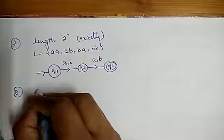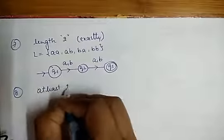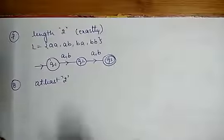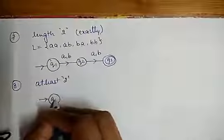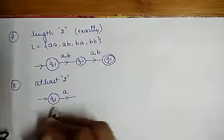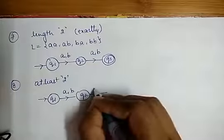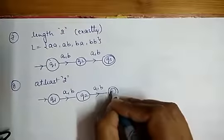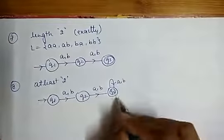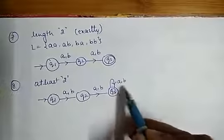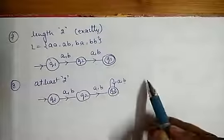Eighth example: I have to draw an NFA for strings of at least length 2. At least means minimum 2; maximum can be anything. If Q1 is the initial state showing length 0, then Q2 shows length 1, then Q3 shows length 2. On the final state Q3 I create a loop with input A or B, which shows n number of lengths — meaning 2 length and many more.